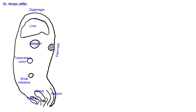Now let's sketch the peritoneum. We should remember that the peritoneum is divided into visceral and parietal layers, and these layers are continuous with each other — it is a single sheet of peritoneum. The parietal layer is related to the walls and the visceral layer is related to the viscera, but they are continuous with each other.